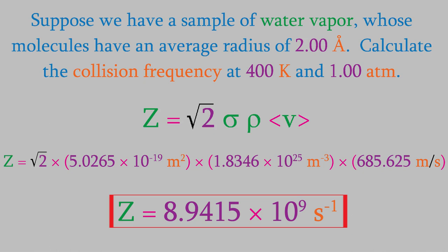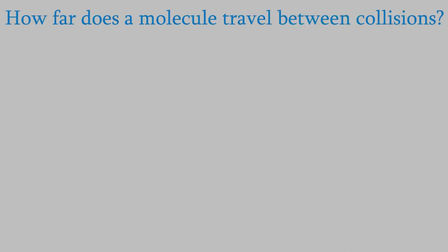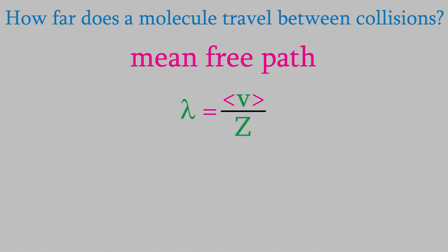In this example, as you can imagine, the collisions happen so often that any single water molecule doesn't travel very far before it collides with another molecule. Exactly how far does a molecule travel between collisions? That's a property called the mean-free path, which has the symbol lambda. It'll be very useful in several equations that we'll use in the future. It's actually a fairly easy thing to calculate. We just take the average velocity and divide by the collision frequency.